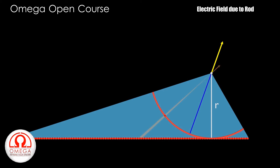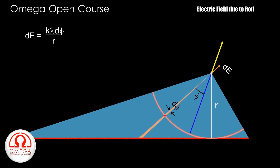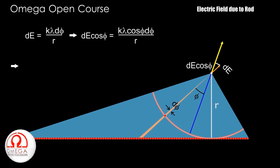Now to find the magnitude of this electric field, let the element be at an angle phi with the bisector, subtending angle d-phi at the center. As we have already calculated, the electric field due to this element is K·lambda·d-phi divided by R. From symmetry, we know that the net electric field is along the bisector of the arc. So we only need the component of the electric field in the direction of the bisector, which equals K·lambda·d-phi divided by R, multiplied by cos phi. Integrating this over the entire arc gives us the electric field due to the arc as well as the rod.